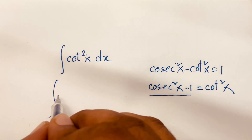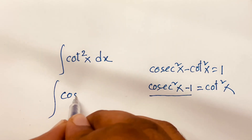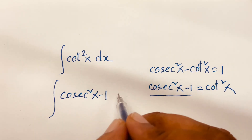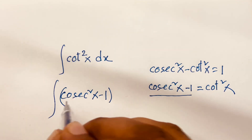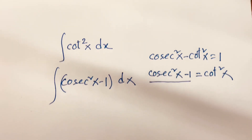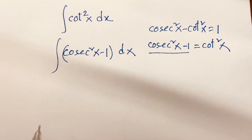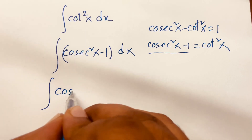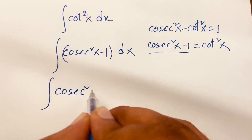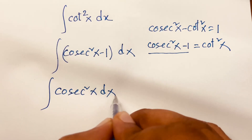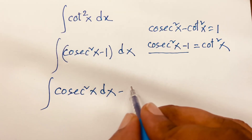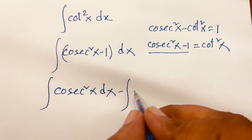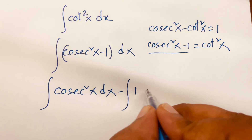So I can say cosec square x minus 1, and here is dx. Then I can say it will be integral of cosec square x dx minus integral of 1 dx.